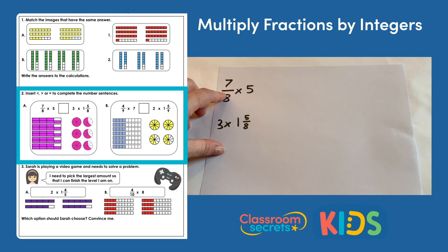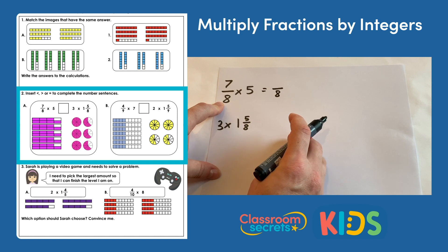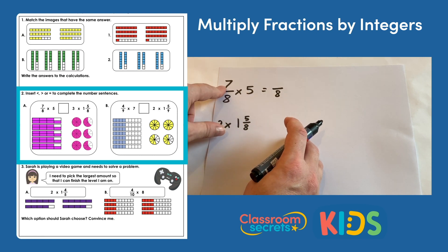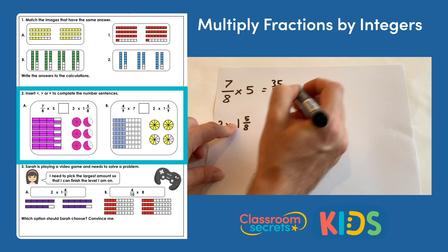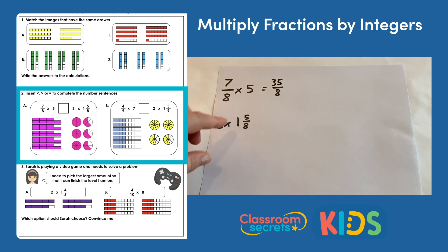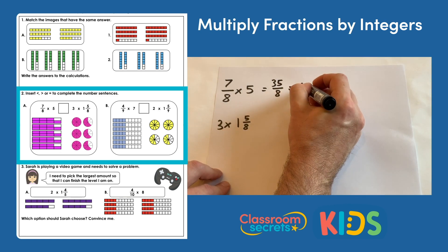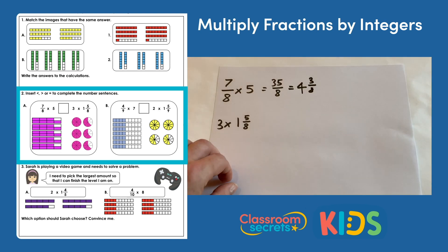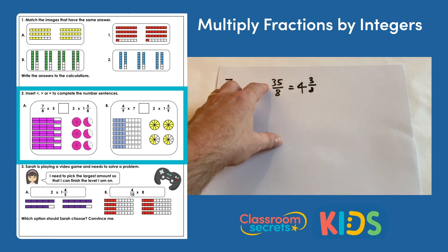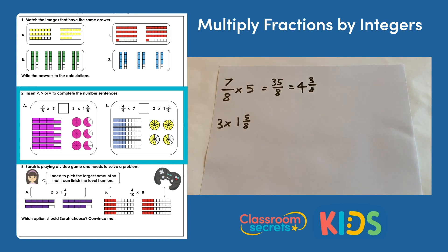For seven eighths multiplied by five, the answer will be in eighths. Multiplying the integer by the numerator: seven multiplied by five is thirty-five, giving thirty-five eighths. Converting to a mixed number, we can make four wholes using thirty-two eighths, with three eighths left over, giving four and three eighths.